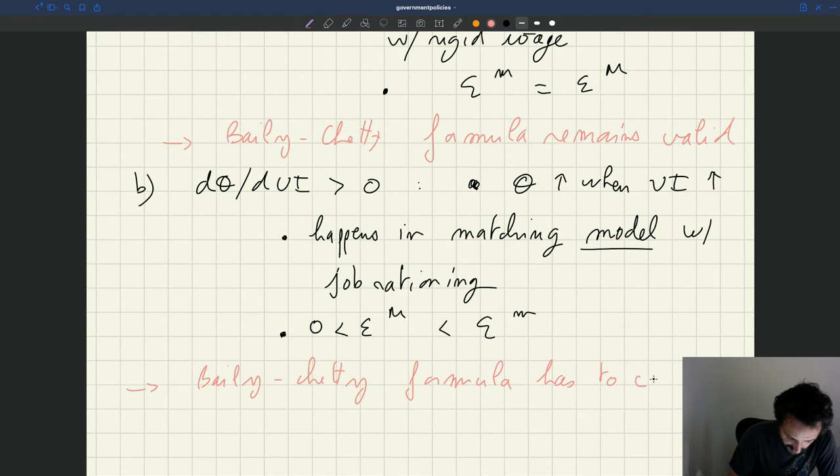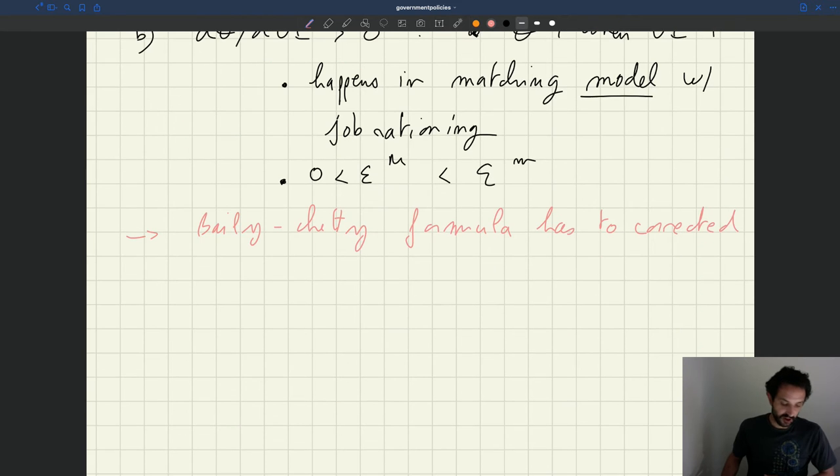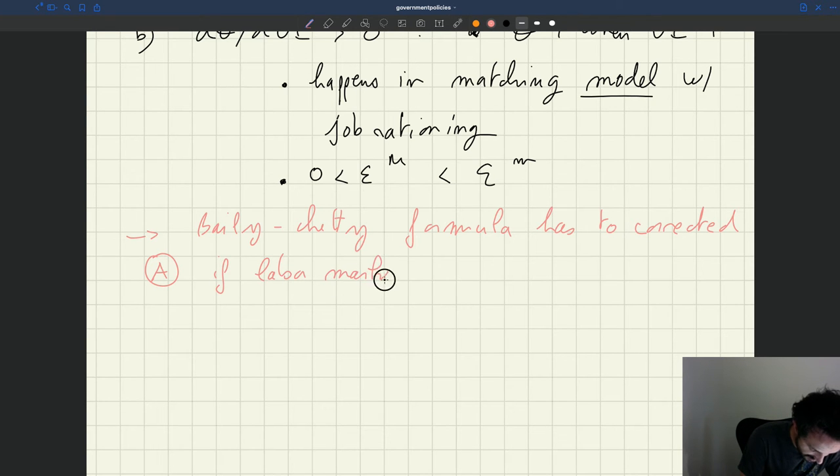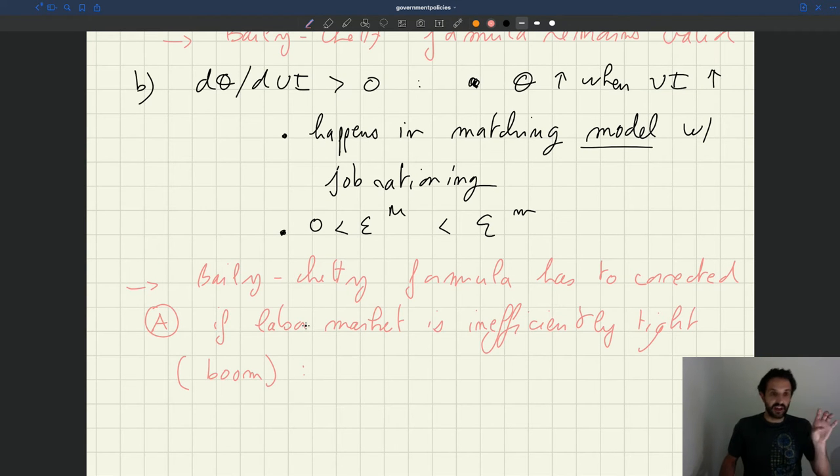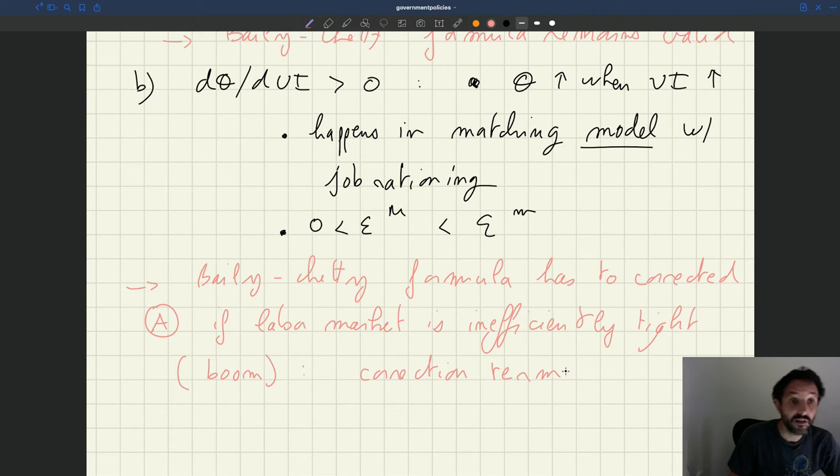This formula has to be corrected, and we know what the correction must be. So there are two possible things. Case A: if the labor market is inefficiently tight, which corresponds to a boom, what happens? When the labor market is inefficiently tight, it means that the derivative of social welfare with respect to tightness is negative. Now, the derivative of tightness with respect to UI is positive. So in that term, the correction term in the formula is negative because it's the product of a positive term and a negative term.